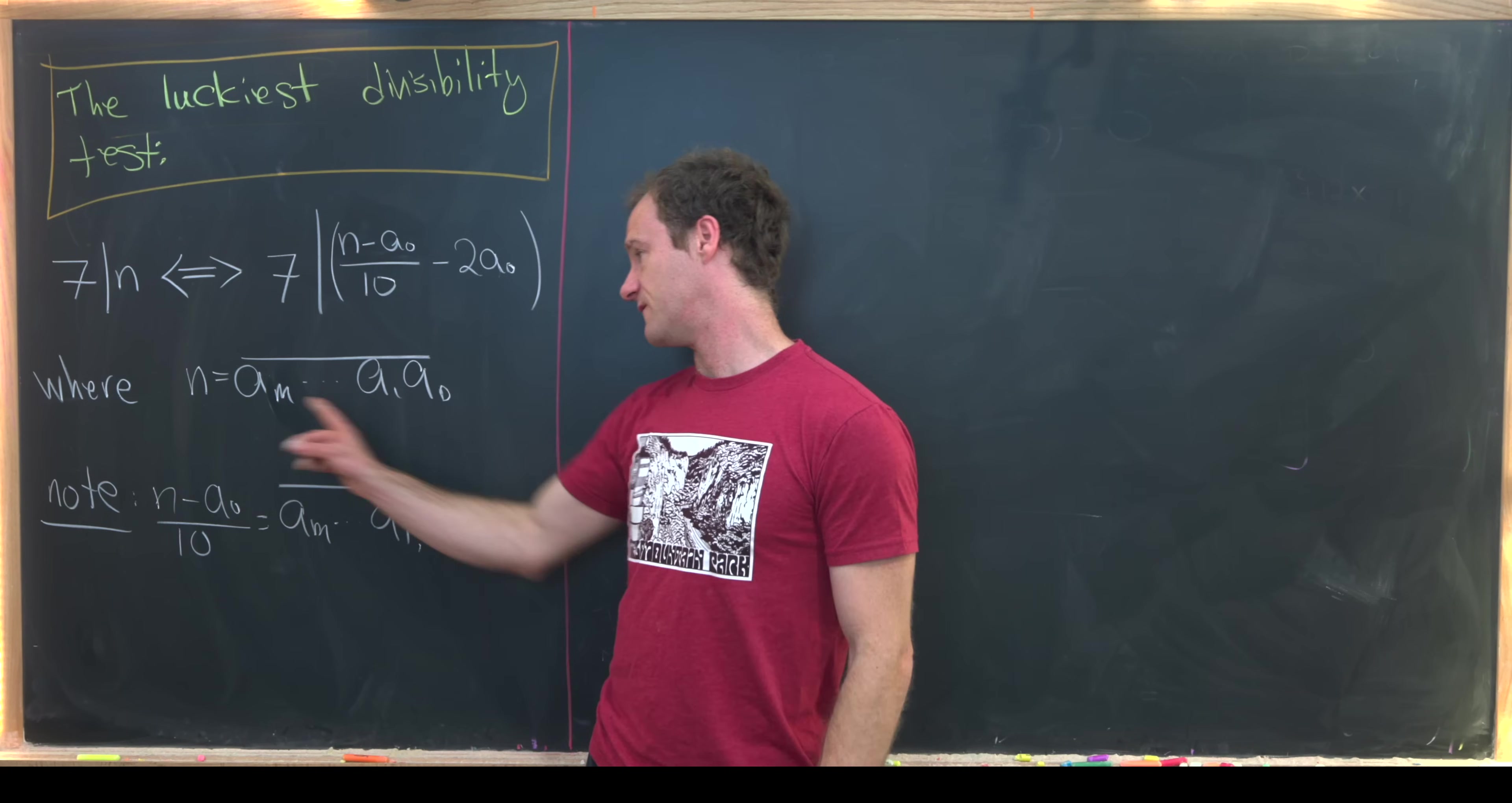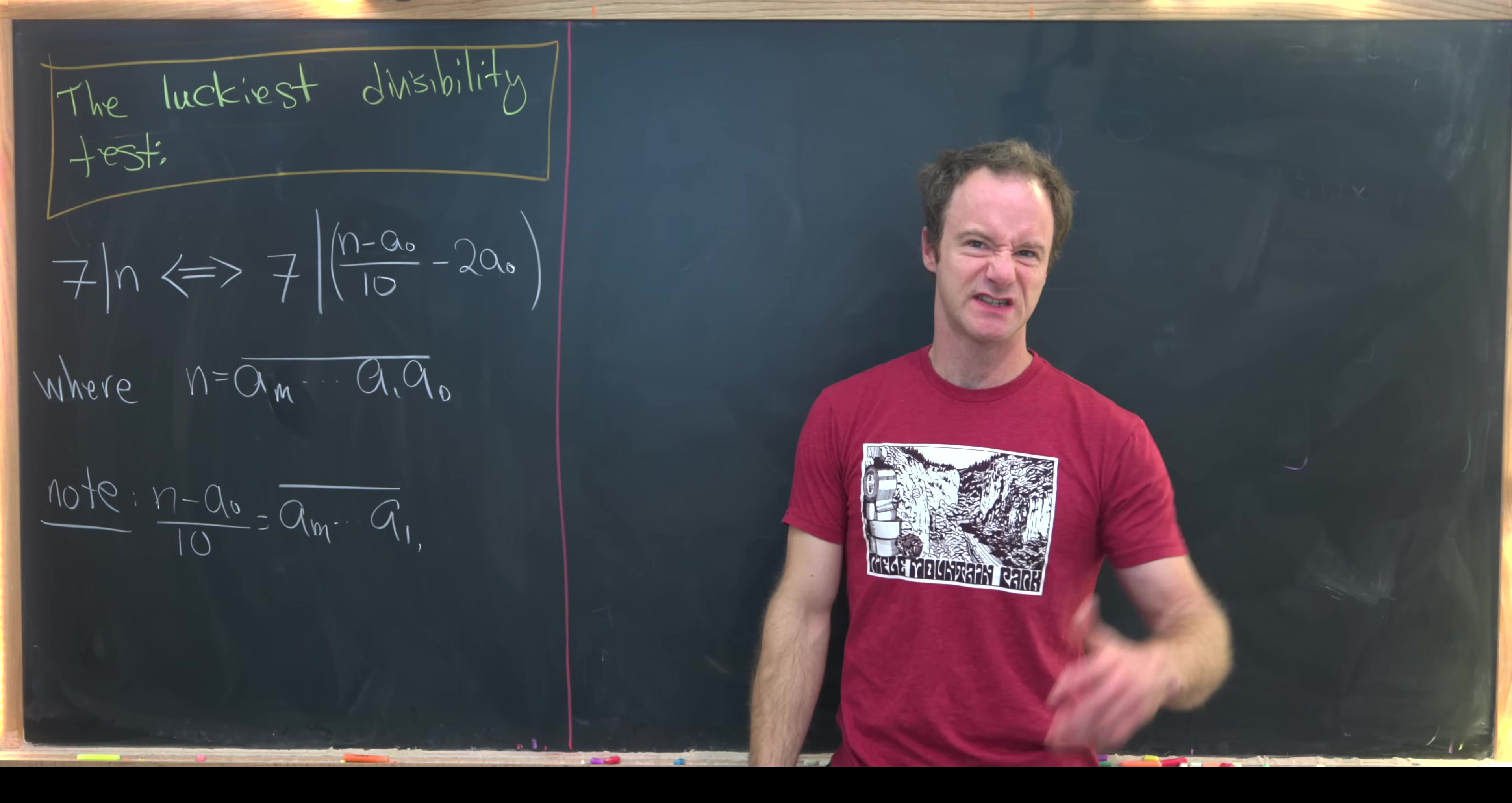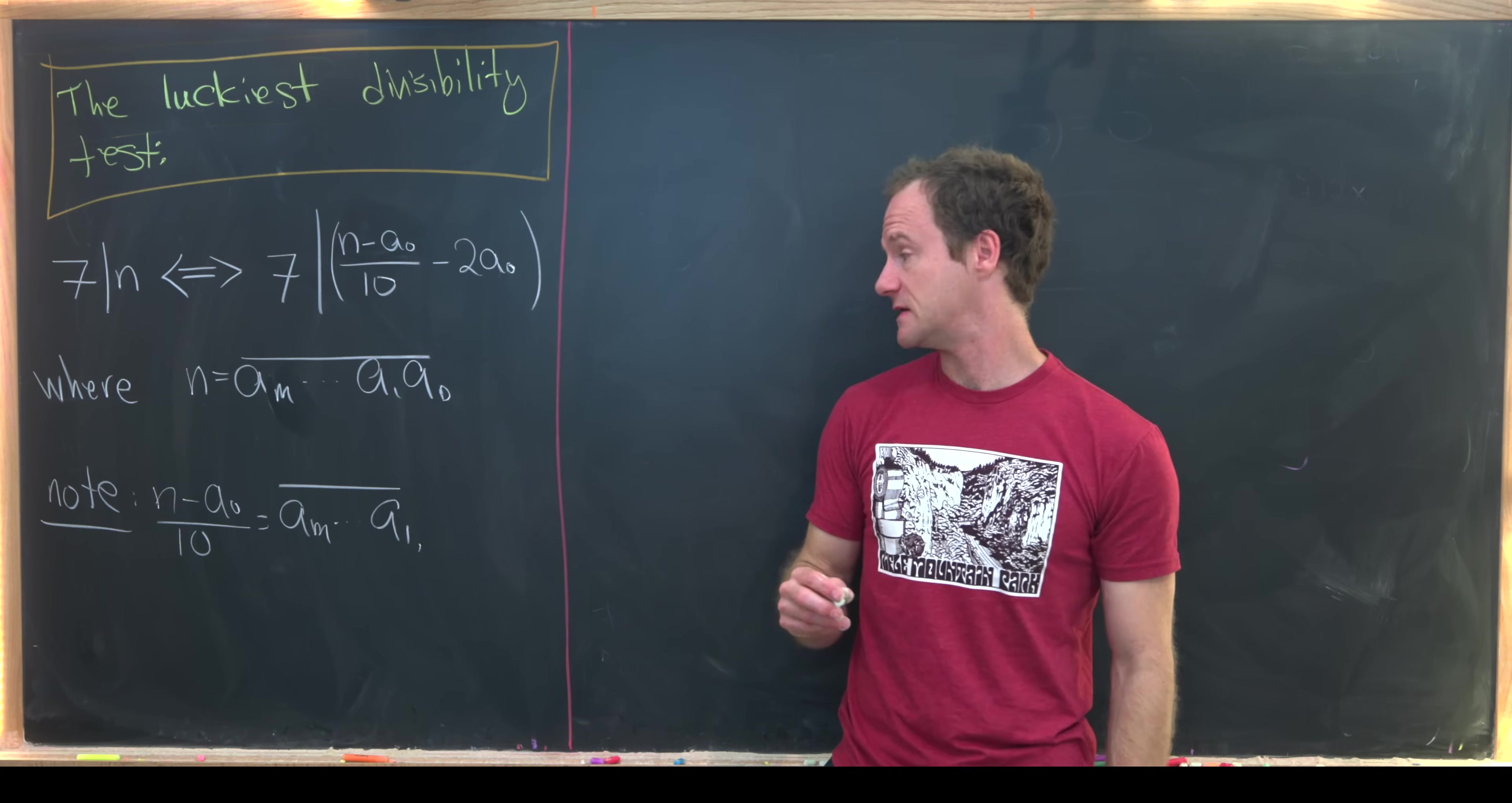Well, it is the ones digit or the units digit of n. So in other words, if we write n via its digits as a_m, a_(m-1), down to a_1, a_0, I'll put the line over it just to say that this is the number made up of those digits. So these numbers are obviously between zero and nine.